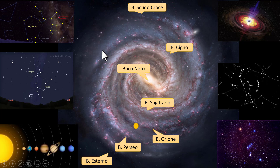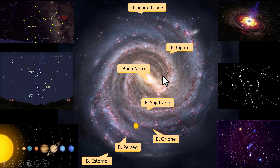This is the main structure of the Via Lattea, but one thing that must be said is that we cannot see the part beyond the nucleus because the nucleus obscures it. So there is an area of the galaxy that we cannot see, and we imagine it could be so because we see other galaxies similar to ours — by observing those galaxies and seeing how ours develops, scientists have reconstructed the missing part.